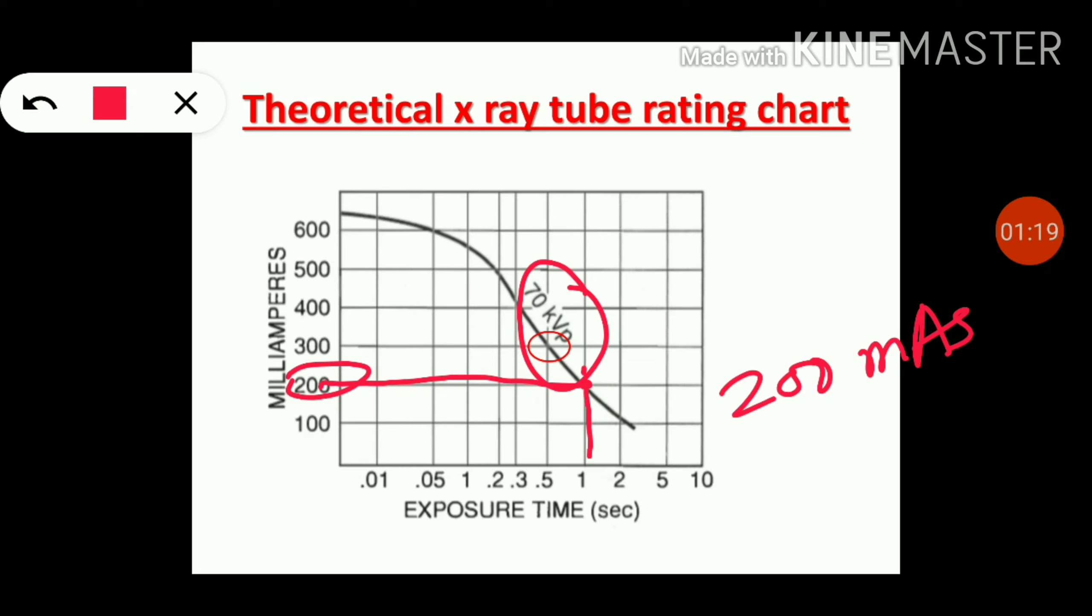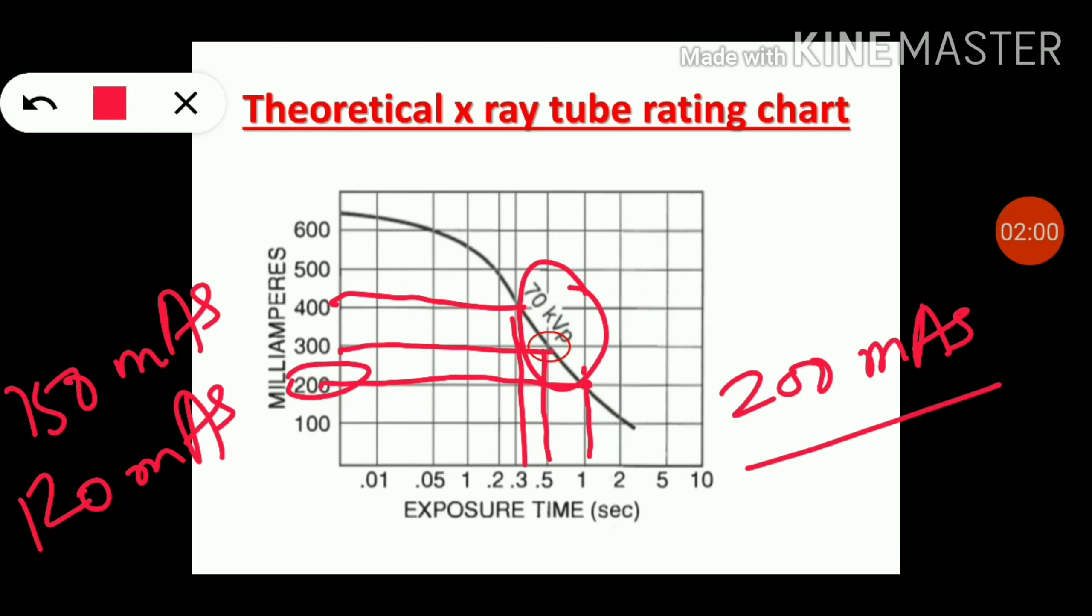If we attempt to get a shorter exposure, we would fail because the tube is limited. At 300 mA it's limited to 0.5 seconds, which gives 150 mAs, and at 400 mA it's 0.3 seconds, giving 120 mAs. We must get an exposure time of at least 1 second to get 200 mAs at 200 mA on 70 kVp.